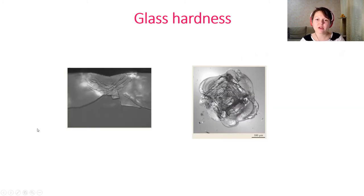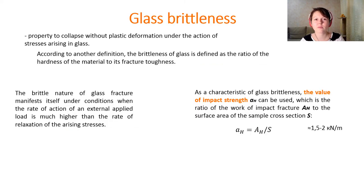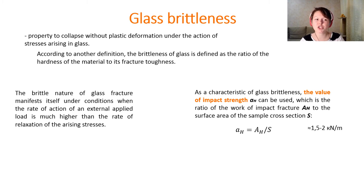The last glass property discussed here is glass brittleness — the property to collapse without plastic deformation under the action of stress. According to another definition, brittleness of glass is defined as the ratio of hardness to fracture toughness. The brittle nature of glass fracture manifests when the rate of external applied force is much higher than the rate of relaxation of rising stresses inside the glass.